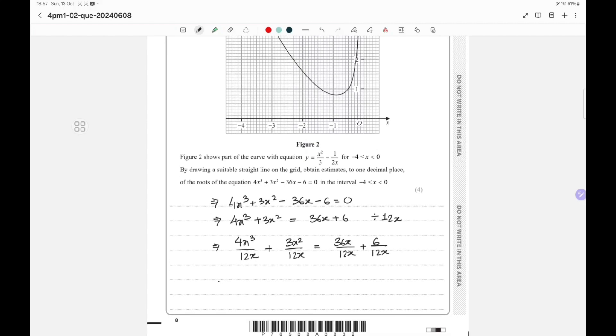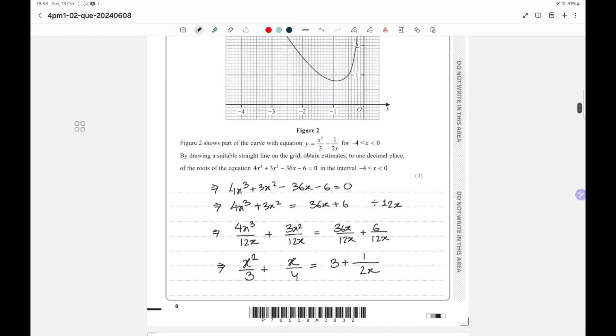So this becomes x square by 3 plus x by 4 equals 3 plus 1 by 2x.